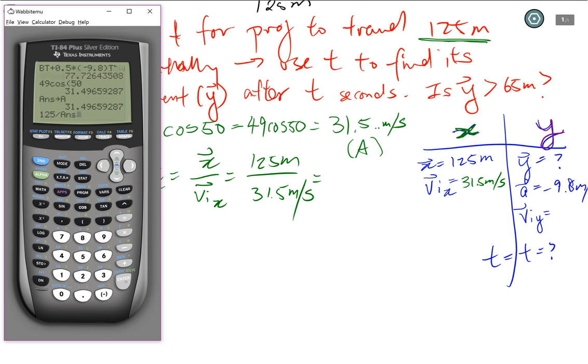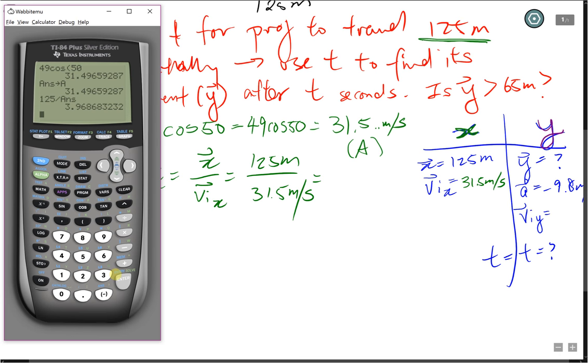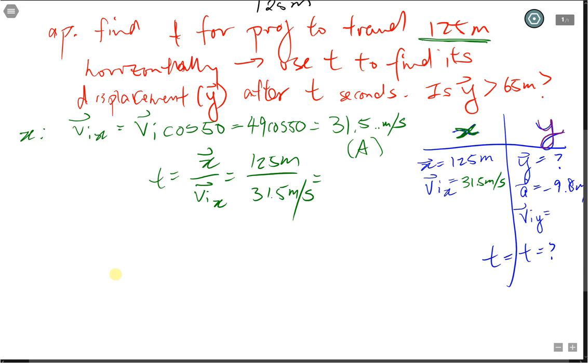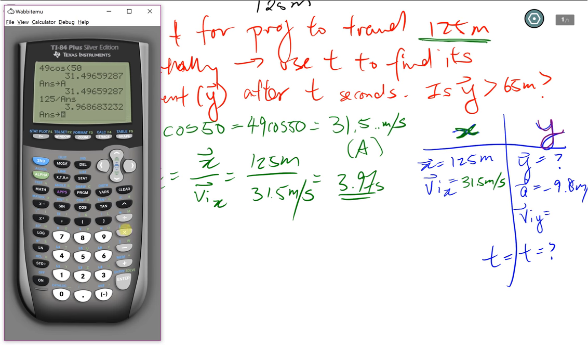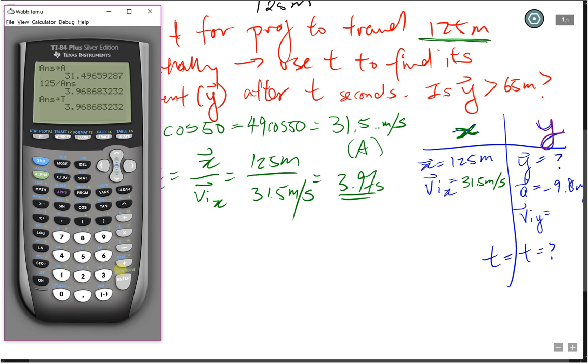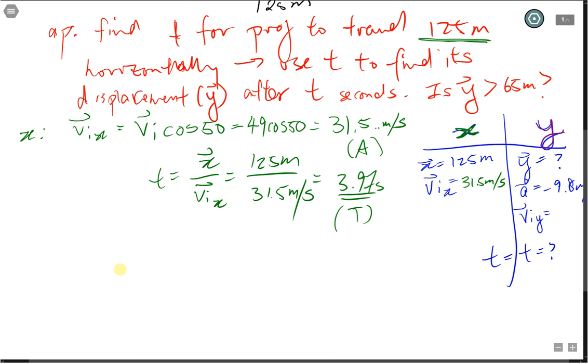This one is 125 meters divided by 31.5 meters per second. This one will give me 3.97 seconds. And again, I'm going to store this number on my graphing calculator, alpha T. Recording it down just so I remember. Our time is 3.97 seconds.